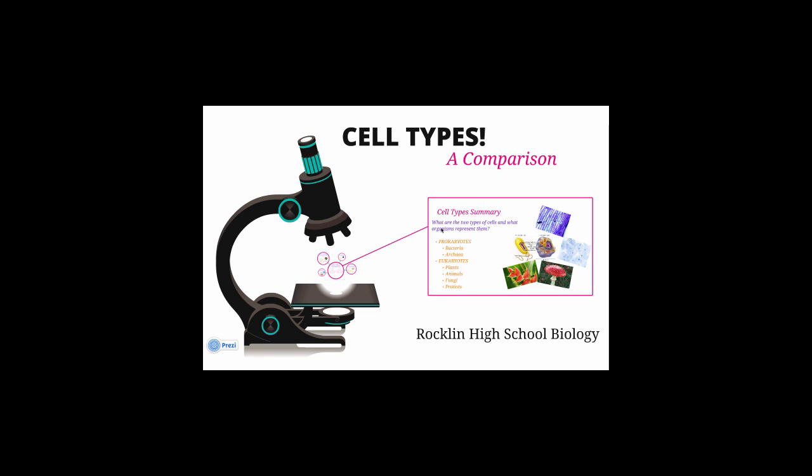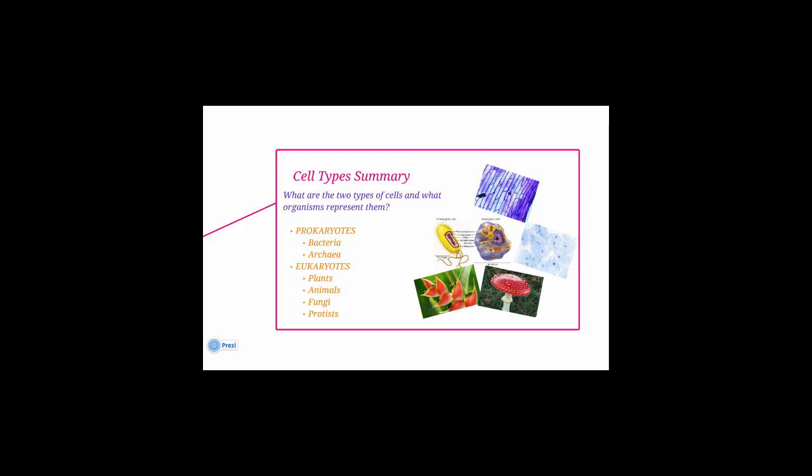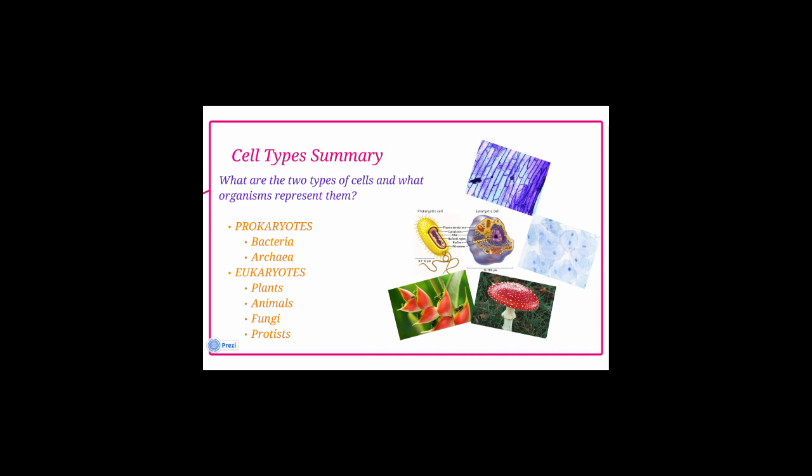Basically, you're going to write the purple questions on the left side of your notes. On the right side of your notes, you're going to write the yellow answers. So, first question: what are the two types of cells and what organisms represent them?